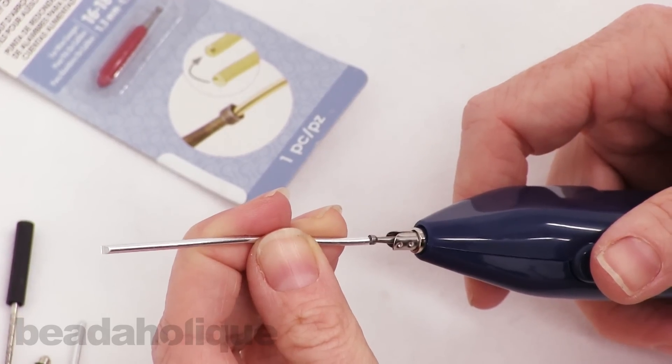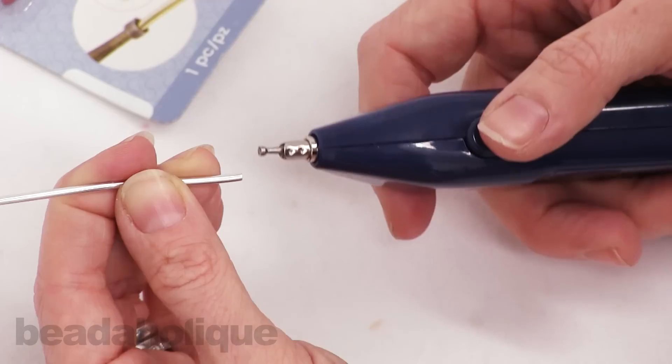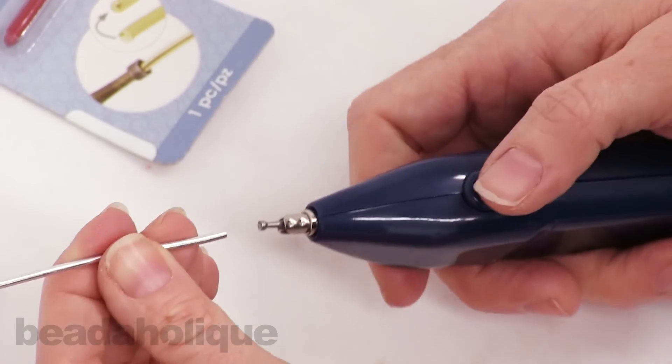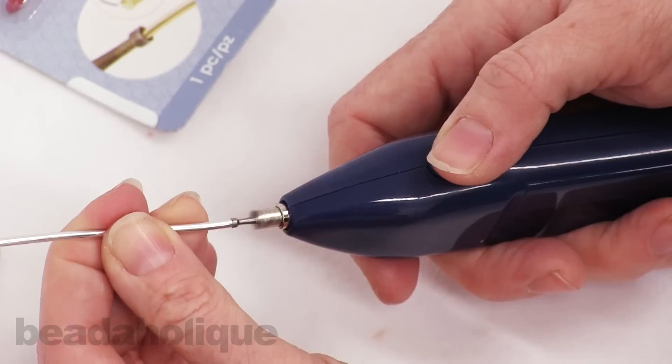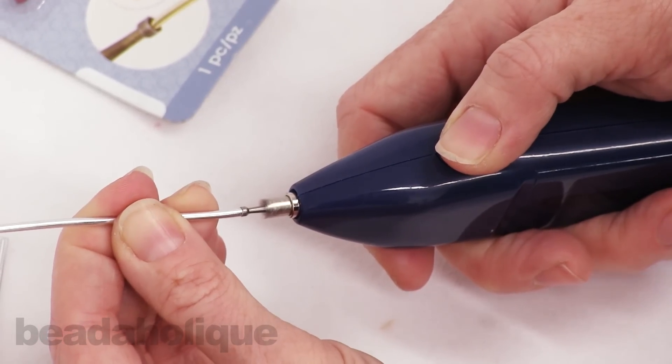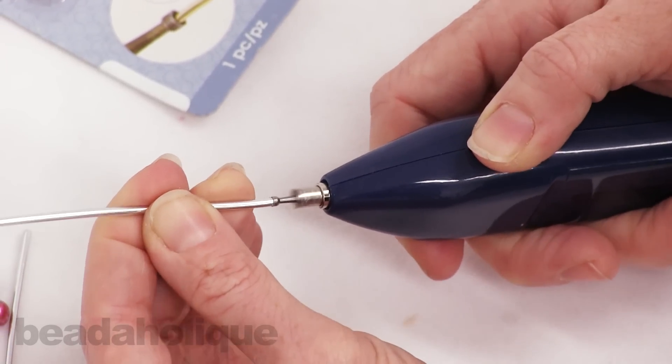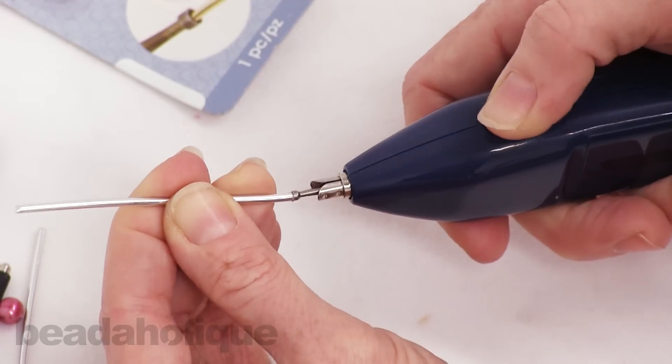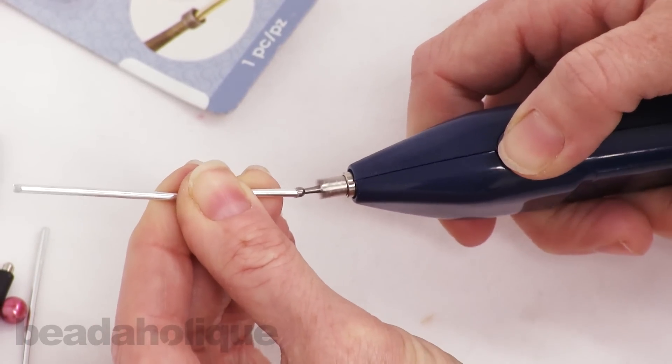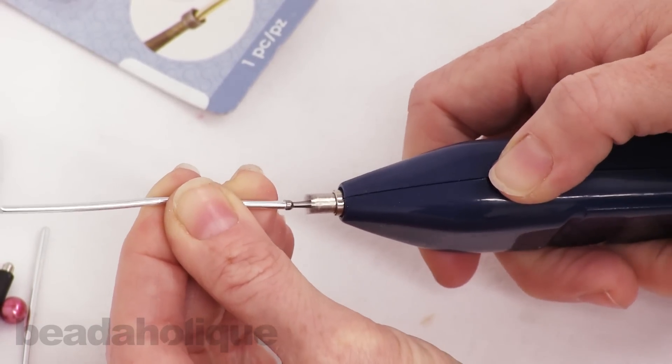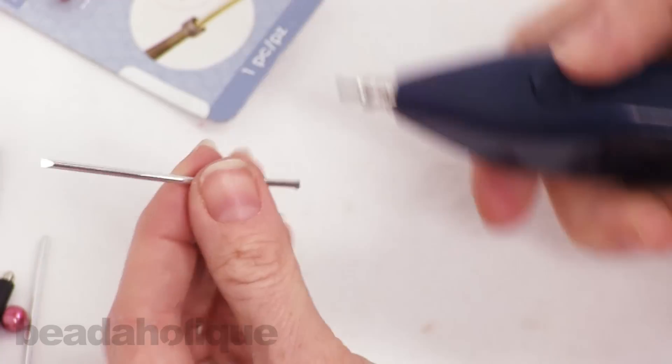Now the 12 gauge wire to begin with is just an exact perfect fit, but as you start rounding it, it's going to sit into that cup more so you can get the really nice rounded shape. And what I find helps is if you just rotate your tool ever so slightly.